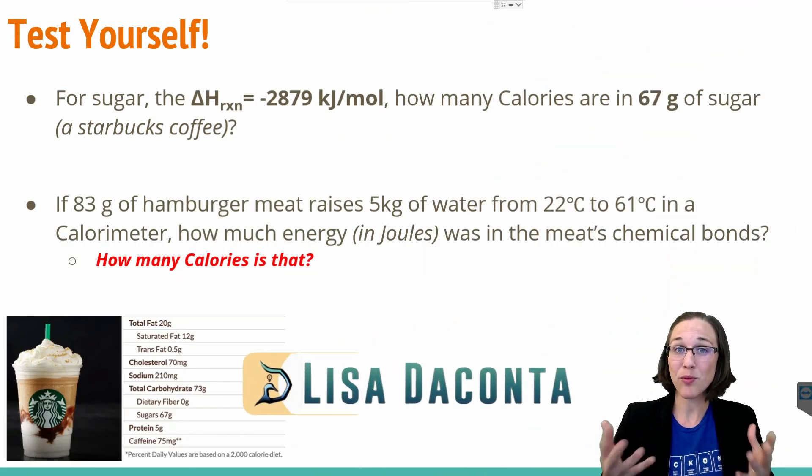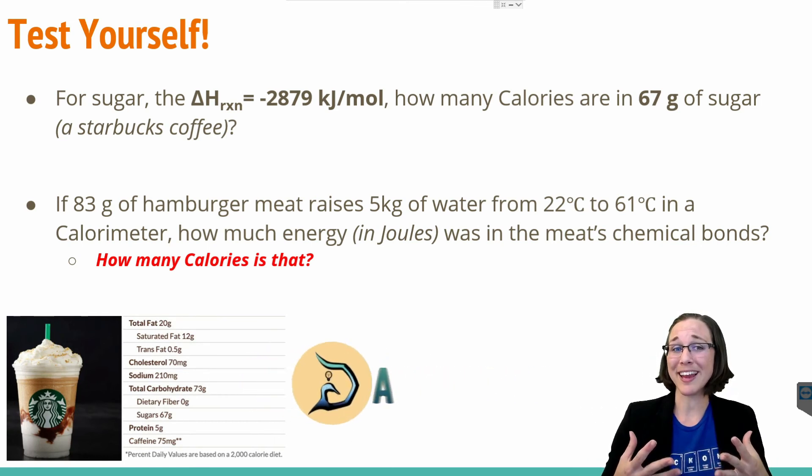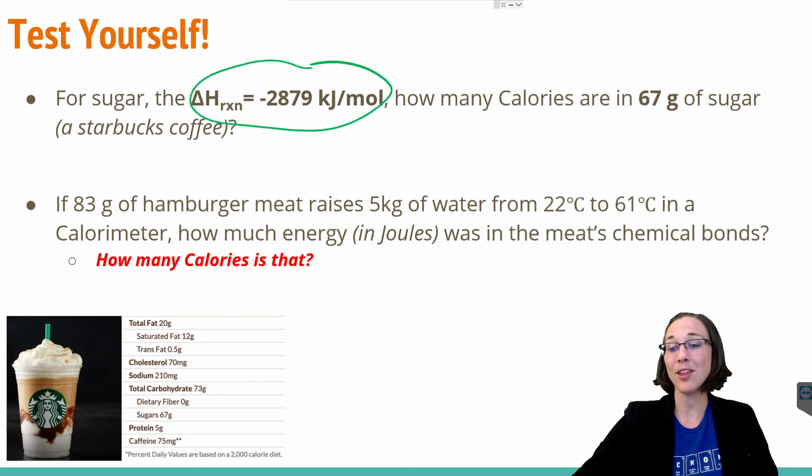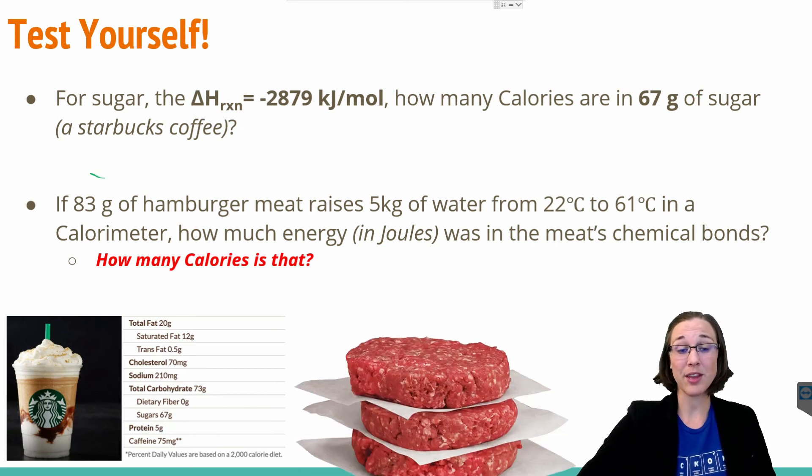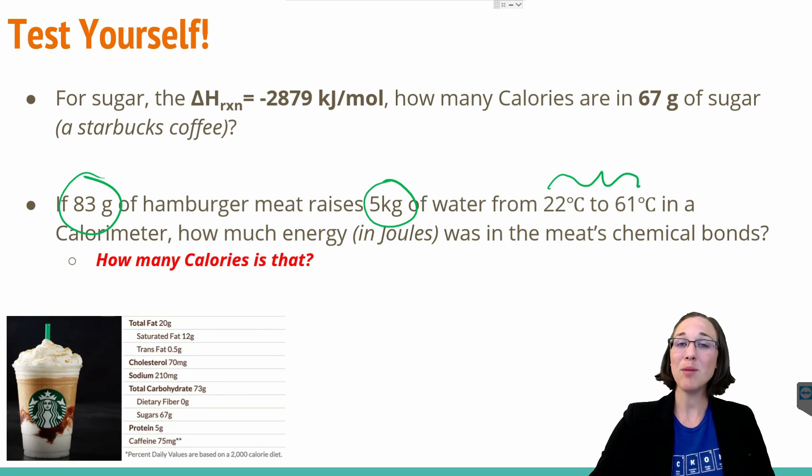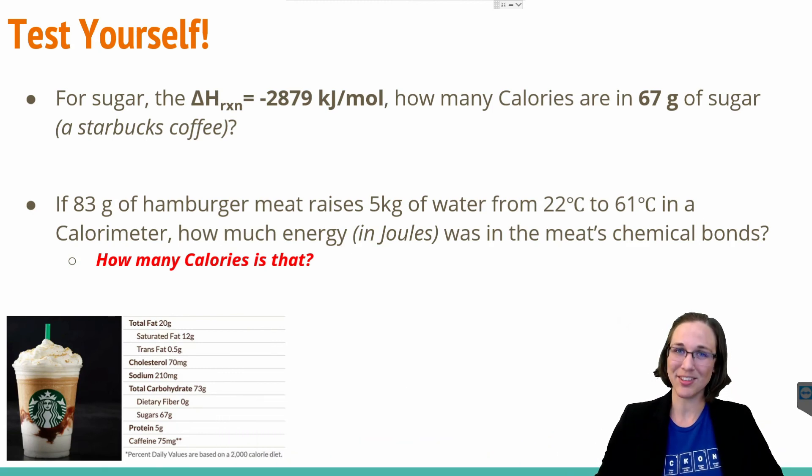In the next video, we will actually be performing bomb calorimetry in a jerry-rigged at-home version of a calorimeter. But before you get there, make sure that you can answer the following two questions. For sugar, which we know the delta H of the reaction as negative 2,879 kilojoules per mole, how many calories are in 67 grams of sugar, i.e. one Starbucks coffee? And also, if we took 83 grams of hamburger meat and that raised 5 kilograms of water from 22 degrees Celsius to 61 degrees Celsius in a bomb calorimeter, how much energy in joules was in the meat's chemical bonds? And also, how many calories was that? Please give this video a quack sup and when you're out of luck in chemistry, subscribe to the duck. Quack you later. And stick around to see how to use that other conversion factor.